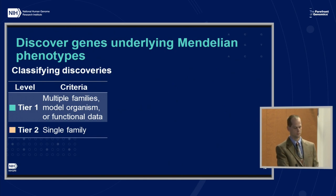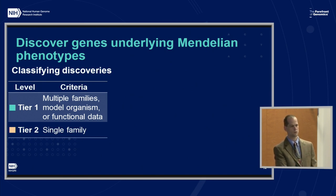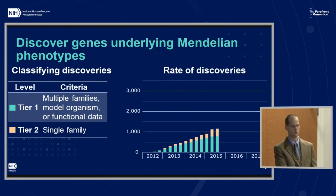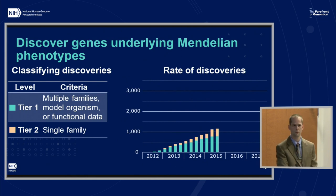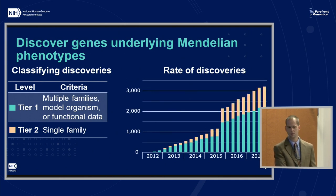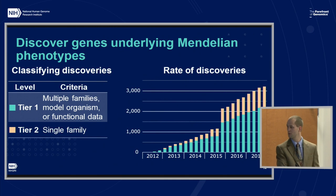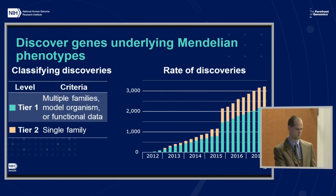When we launched this project, we weren't sure how it would work, so we defined two different tiers of discovery. The higher-confidence tier one discoveries are where there are multiple lines of evidence — either multiple families, or one family plus model organism data or functional data. Tier two is where discovery was only in a single family. Starting in the first phase, things were slow for the first year, but by the end there were over 1,000 discoveries, which made us confident in renewing the program. Since the renewal, discovery has continued to pace. That discontinuity represents fairly large collections of samples with similar phenotypes that resolved to a large number of underlying Mendelian causes.